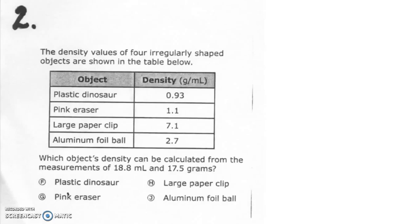Okay, for number two. The density values of four irregularly shaped objects are shown in the table below. These are the densities. Which object's density can be calculated from the measurements of 18.8 milliliters and 17.5 grams?